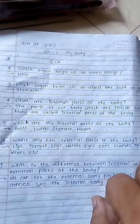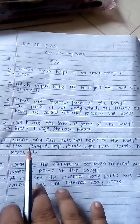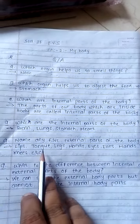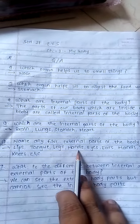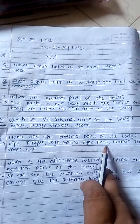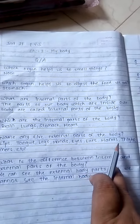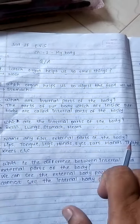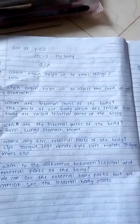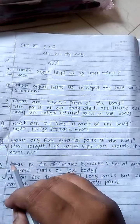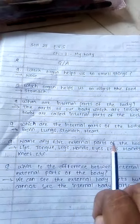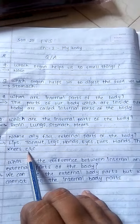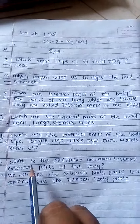Fifth question: name any five external parts of the body. I will write many body parts that are external, but you have to write only five in your notebook: lips, tongue, legs, hands, eyes, ears, knees, and thighs.